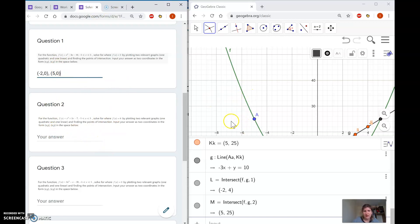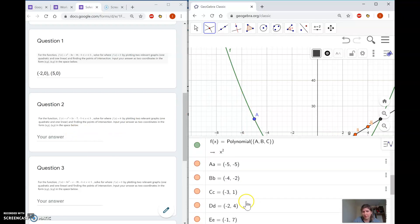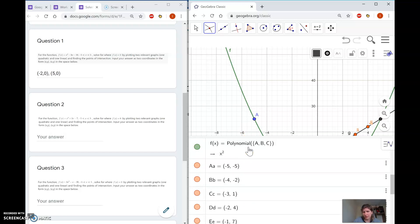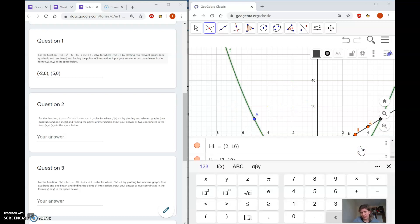For the next question, you can keep all the blue points and the green line the same, and just change the linear coordinates. Change the AA, BB, CC ones and find your new points of intersection. If you want to delete anything, go to the three dots on the side and press delete. If you have any other questions, give me a buzz on Teams and I can help you out. Hope this helped. See you later.